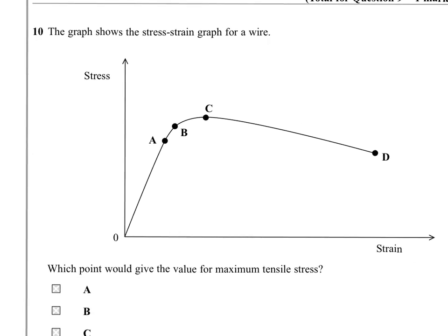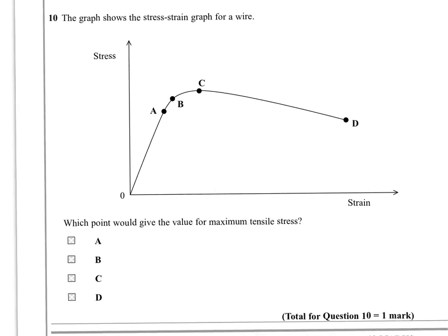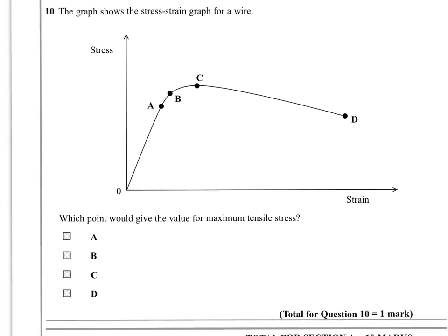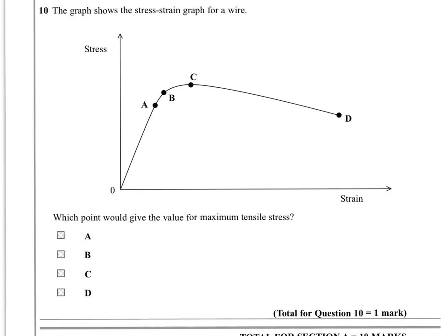Question 10, then. The graph shows stress strain for a piece of wire. And we're asked, which point would give the value for maximum tensile stress? Well, stress is here. The maximum stress, sorry, the maximum stress is the highest value it reaches. So let's see. And that's it.